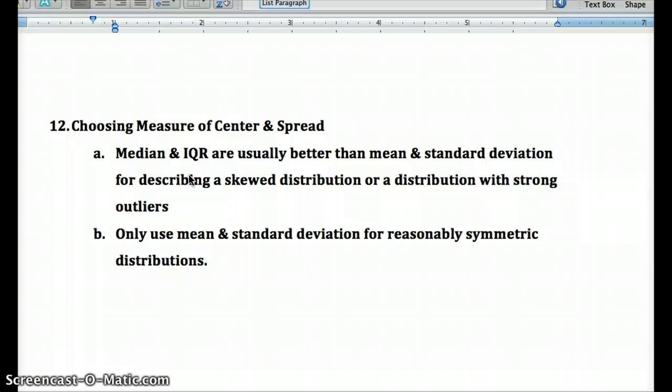They're a more objective way to do it. Outliers might be due to a number of reasons. So median and IQR when they're skewed because they're more objective. Mean and standard deviation give us a good sense when they're reasonably symmetric.